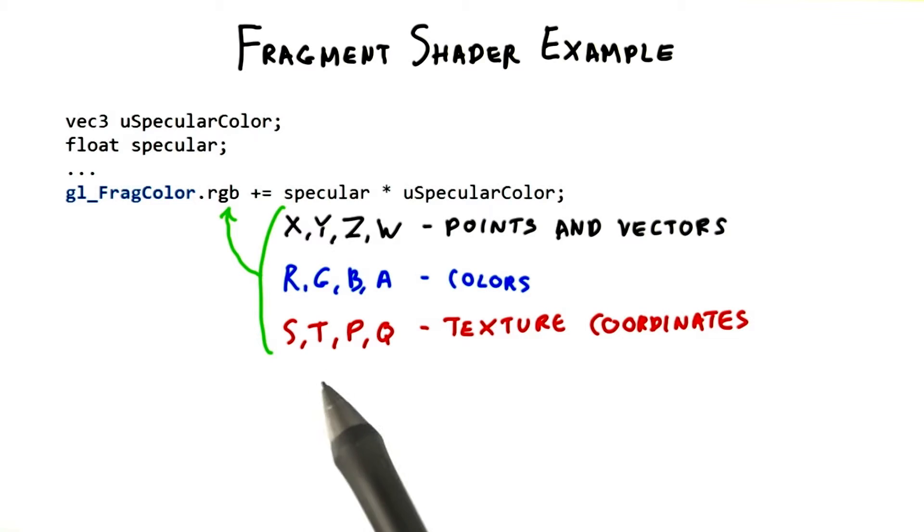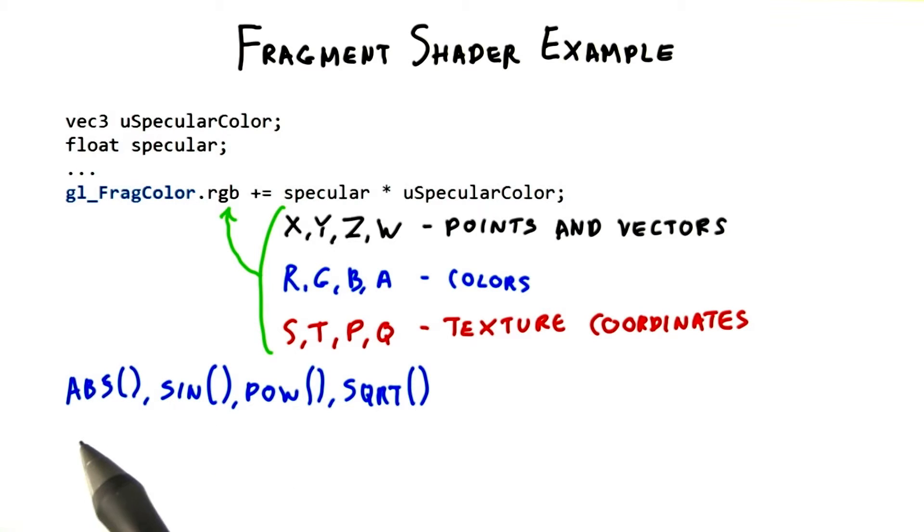S and T are sort of like U and V. I won't go into all the features of the language. See the additional course materials for full references. One thing worth mentioning is that there are all sorts of built-in functions. Some you'll probably be familiar with, such as absolute value, sine, power, and square root.